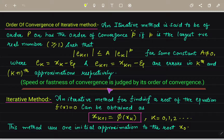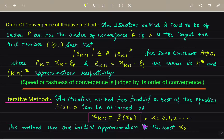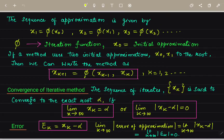For an iterative method to find a root of f(x) = 0, we write xₖ₊₁ = φ(xₖ) for k = 0, 1, 2, ... This method uses one initial approximation x₀. The sequence of approximations is: x₁ = φ(x₀), x₂ = φ(x₁), and so on, where φ is the iteration function.